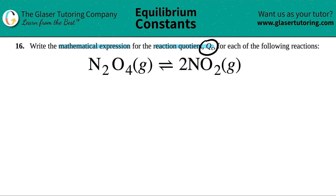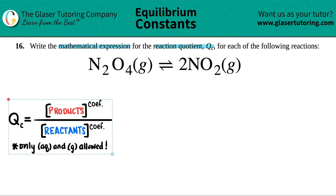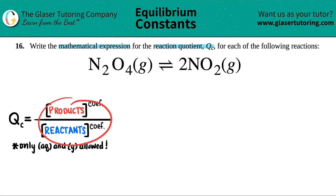The QC formula is a very general formula. The C in QC stands for concentration, also known as molarities. So when we actually start working with numbers, we have to have molarity values that go into this equation.